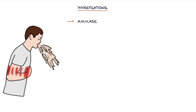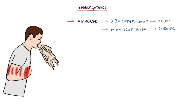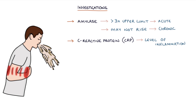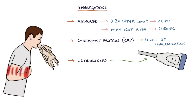Amylase is the key blood test to remember for pancreatitis — it's raised more than three times the upper limit of normal in acute pancreatitis. In chronic pancreatitis, the amylase may not rise because the pancreas has reduced function. A C-reactive protein or CRP blood test can be used to monitor levels of inflammation in the body; this is a very non-specific test which can be raised with any cause of inflammation. An ultrasound scan is the initial investigation of choice for assessing for gallstones in suspected gallstones pancreatitis, however it's not very useful for visualising the pancreatitis itself.